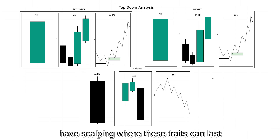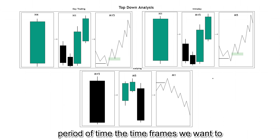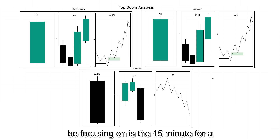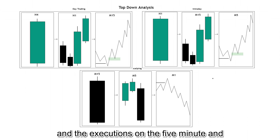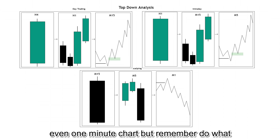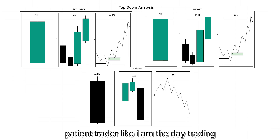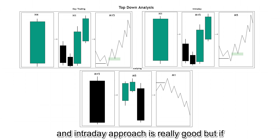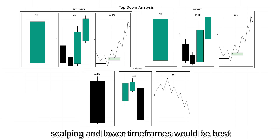For scalping, trades last no longer than an hour — you're in and out of the marketplace quickly. Focus on the 15-minute for higher timeframe bias and execute on the 5-minute and even 1-minute chart. Do what suits you as a trader. If you're more patient, the day trading and intraday approach works well. If you're more impatient and want quicker moves, scalping and lower timeframes would be the best fit.